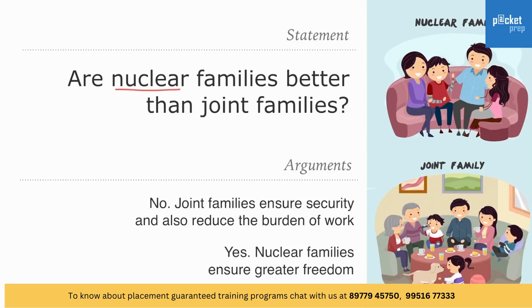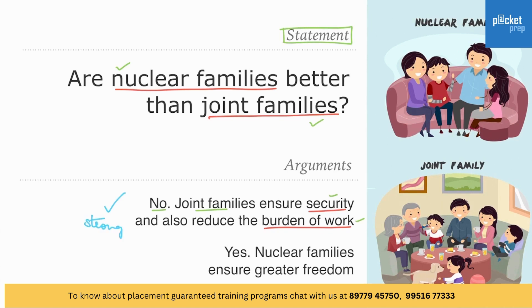Let's try a question. Statement: Are nuclear families better than joint families? The first argument says no — joint families ensure security and also reduce the burden of work. The statement poses whether to go with nuclear or joint families. The first argument supports joint families because they ensure security and the work is shared among people, reducing the burden. Therefore, this is a strong argument.